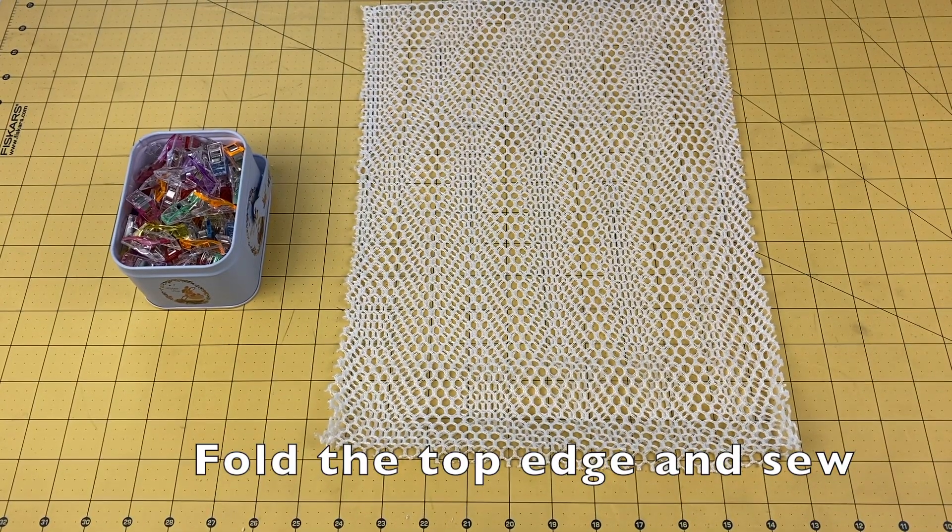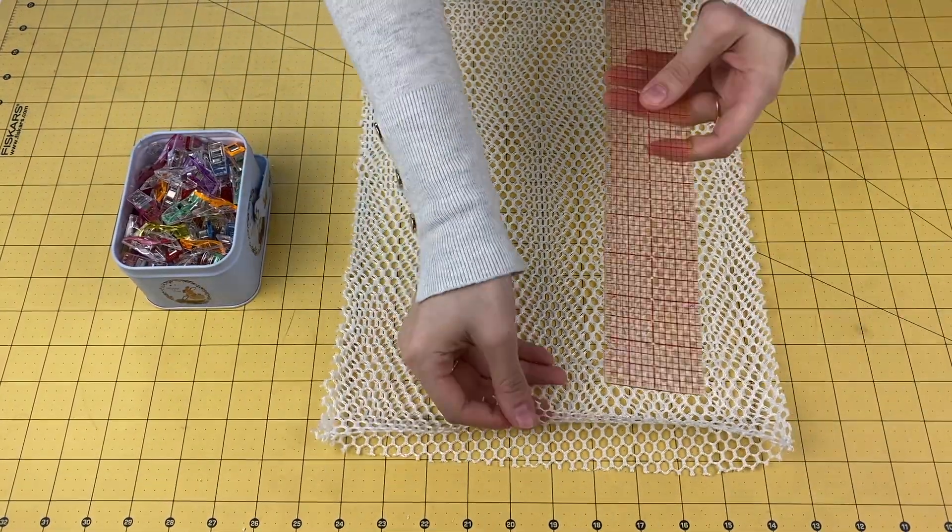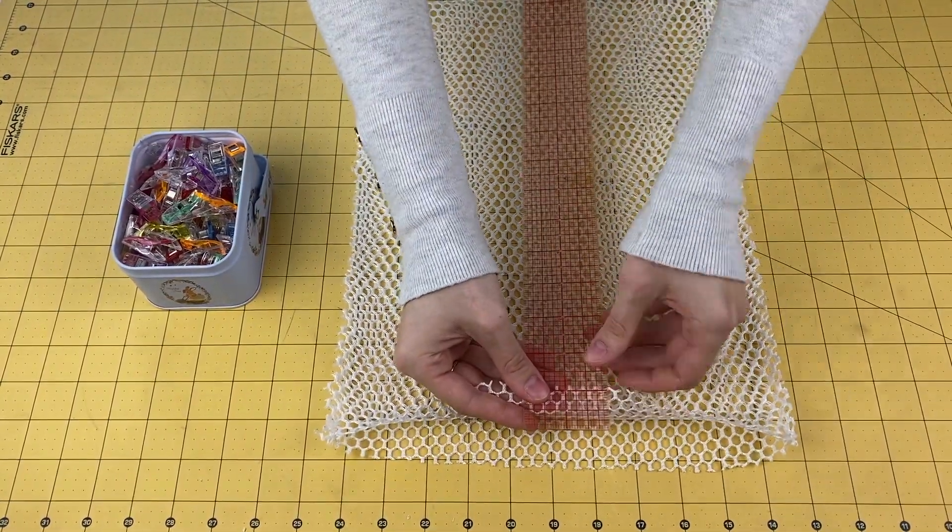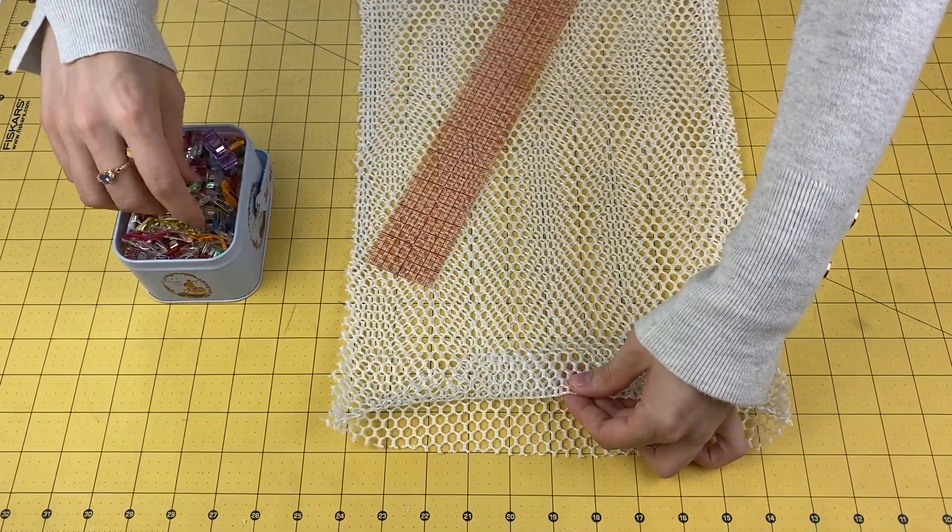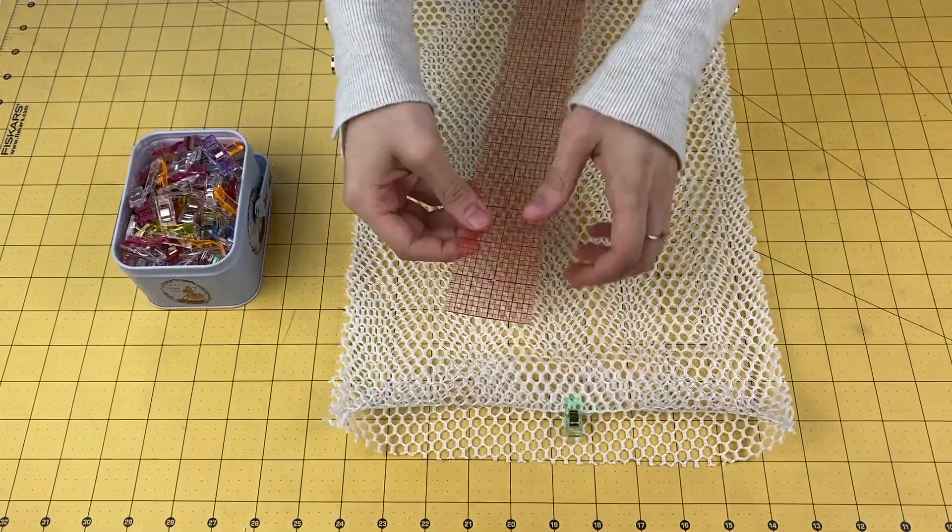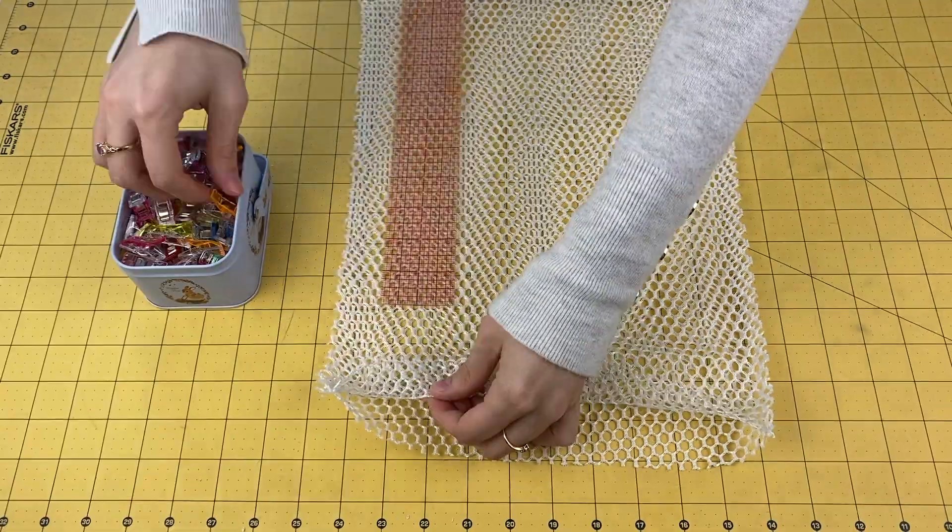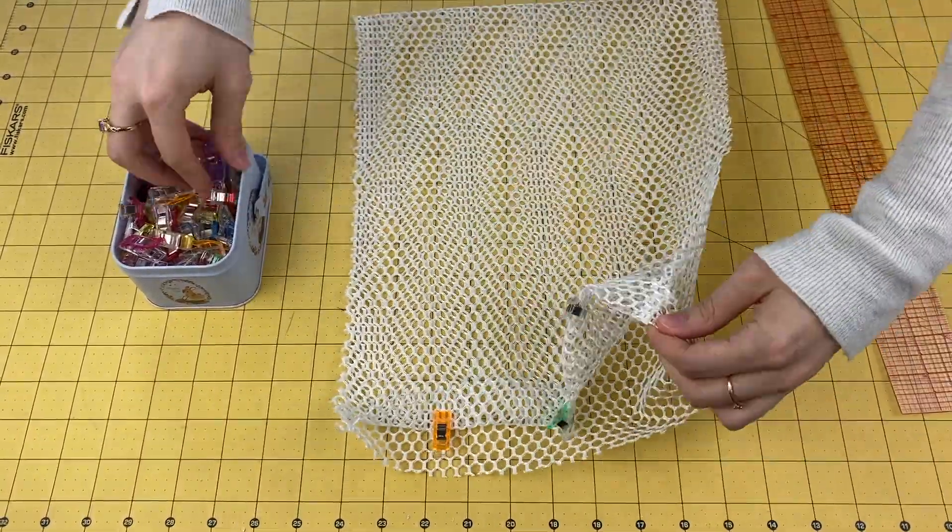Fold the top edge of the bag over 1 inch all the way around, making sure that your raw edges are still on the outside. Clip along the fold to secure it, make sure you do both sides of the bag.